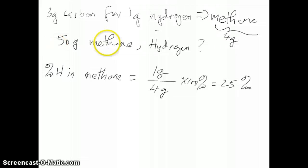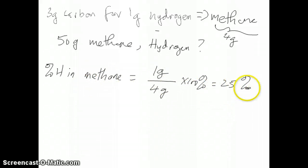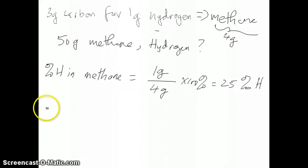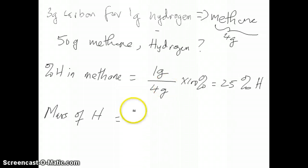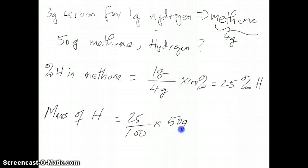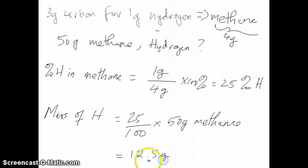To figure out how much hydrogen you have in 50 grams of methane, you know that methane always contains 25% hydrogen. So the mass of hydrogen is just 25% times 50 grams of methane — that's 25 over 100 times 50 grams — which gives us 12.5 grams of hydrogen.